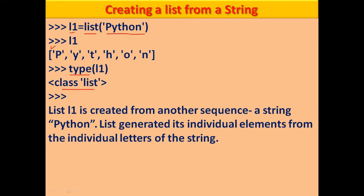The list is created from a string 'python' — the list() function generates individual elements from the individual letters of the string. So the resulting list contains each letter as a separate element.